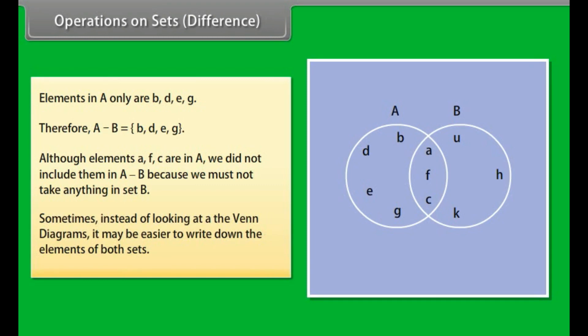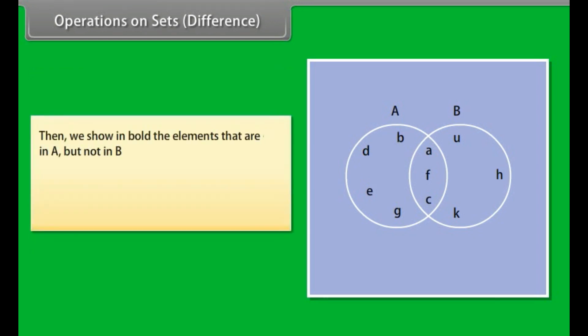Sometimes, instead of looking at the Venn diagrams, it may be easier to write down the elements of both sets, then show in bold the elements that are in A but not in B. A = {B, D, E, G, A, F, C}. B = {K, H, U, A, F, C}.